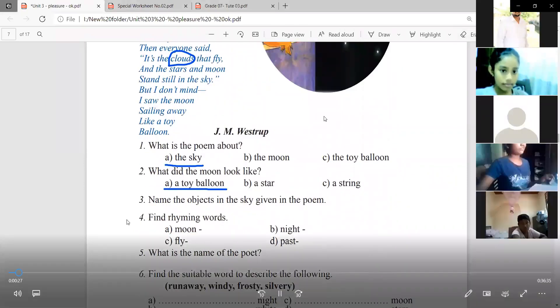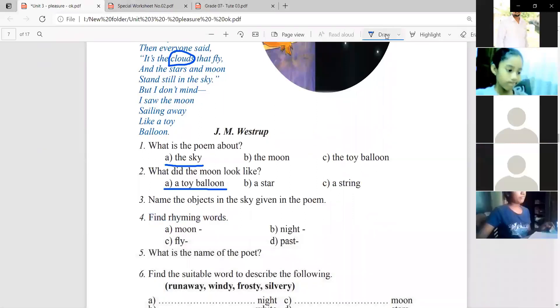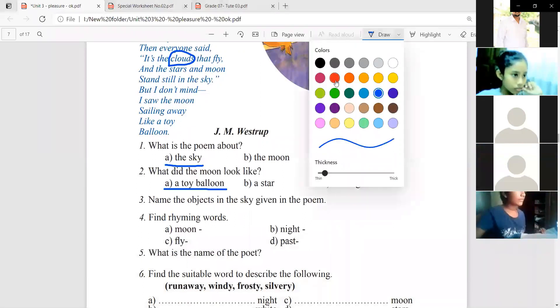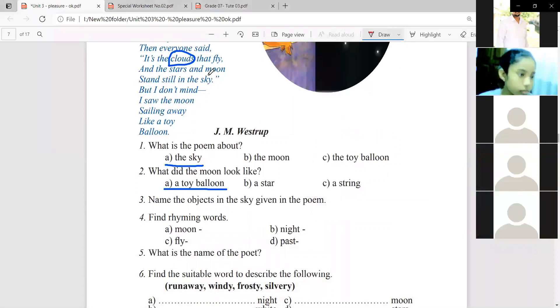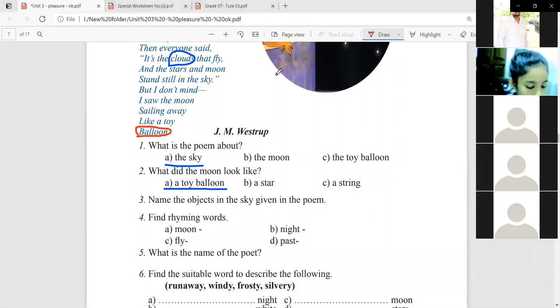Number four, find rhyming words. If you look at the moon, the moon is a word in the poem. Balloon. Balloon. If you look at the moon, it is a balloon. That's the same thing.